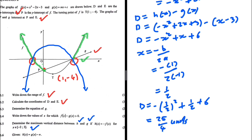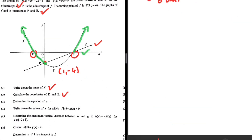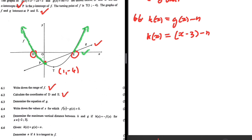The maximum vertical distance between h and g is 25/4 units. For 6.6: given k(x) = g(x) - n, determine n if k is a tangent to f. Substituting g(x) = x - 3, we get k(x) = x - 3 - n. The gradient of k(x) is 1.